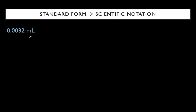Next I have 0.0032 milliliters. Same exact rules — I write the values that are not zero placeholders between 1 and 10, then multiply by 10. This is the first time that my starting number is smaller than the number I have written, so I have a negative exponent. I needed to move my decimal three times to get it to this form, so I have 3.2 × 10⁻³ milliliters.